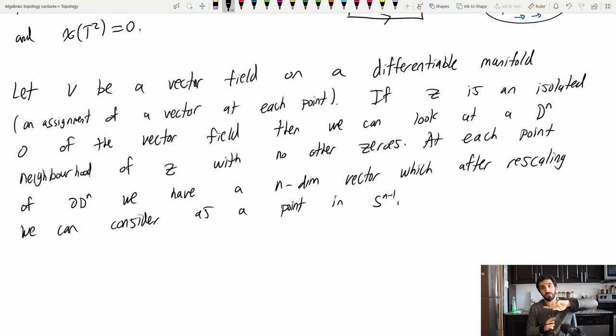Which after rescaling we can consider as a point in Sn-1. So I'm going to draw some pictures soon and that'll make everything make a little more sense. But the idea is each vector is basically a direction. And if it's a short vector, I can make it a little longer so that it hits the sphere. And if it's a really long vector, I can shrink it down so that it hits a sphere.